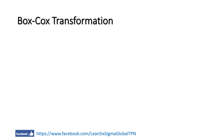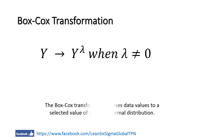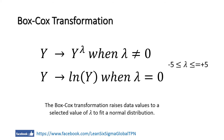The Box-Cox transformation works by raising each value to a power between minus five and five. This value is called lambda. Note that a special case applies when lambda is equal to zero, where we take the natural log of the value. You can see the formula here for this Box-Cox transformation.